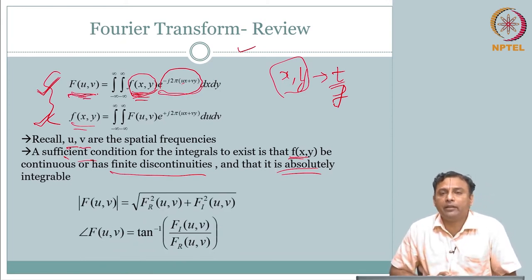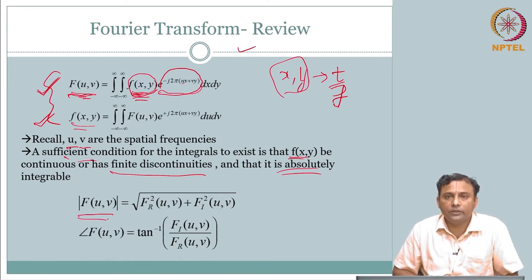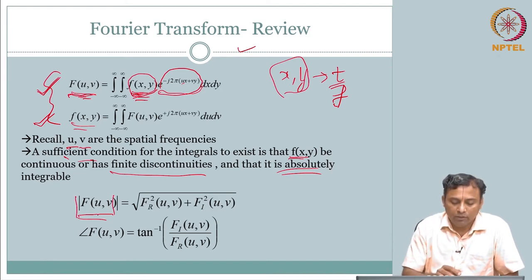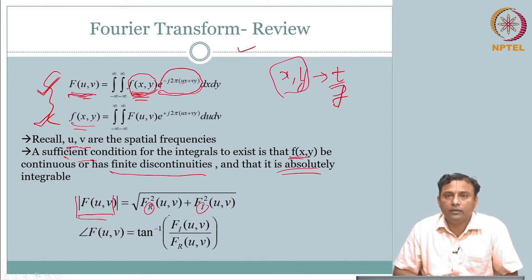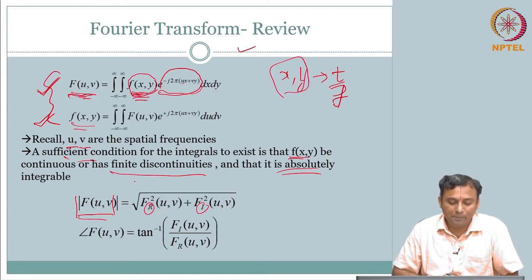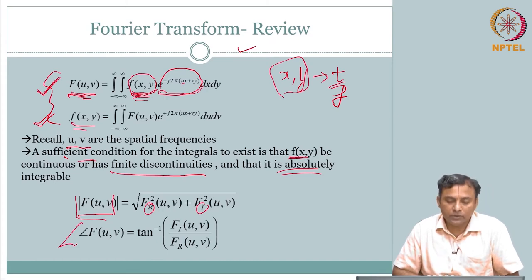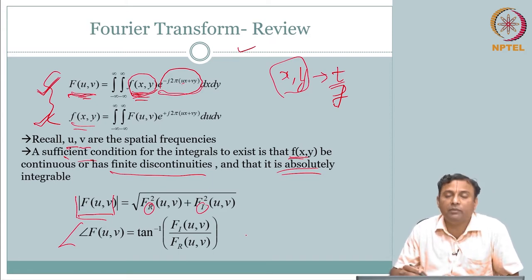If you break the signal f(x, y) into its frequency components, you can calculate the magnitude — called your magnitude response or magnitude spectra. The real part and imaginary part give you: magnitude spectra, and if you square it, you get power spectra. You also have the phase spectra. You can decompose into magnitude spectra and phase spectra. Note that you need both of them to uniquely identify f(x, y).